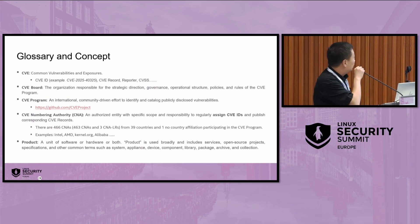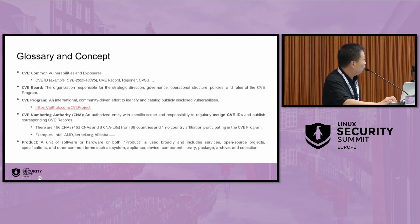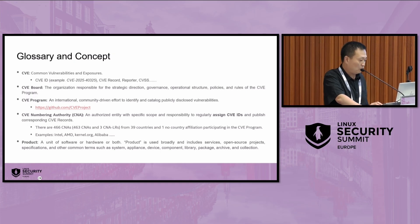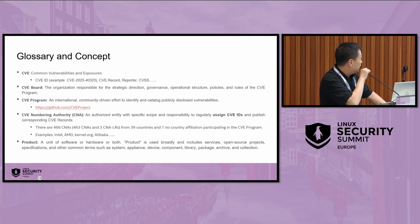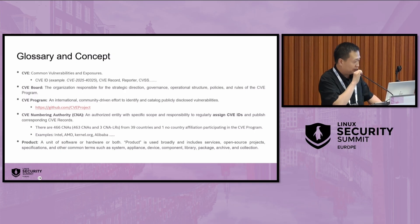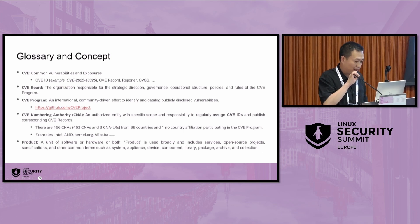This page shows some basic concepts of CVE and OS hardening. CVE means Common Vulnerabilities and Exposures. It normally has a CVE ID — for example, CVE-[year]-[number] — and also structured data in the CVE record. We also have the CVE Board, which is an organization responsible for strategic direction, operations, policies, and rules of the CVE program. The CVE program is an international community-driven effort to identify and catalog CVEs. We also have the CVE Numbering Authority (CNA), which has defined scope and responsibility to regularly assign CVE IDs and publish corresponding CVE records.